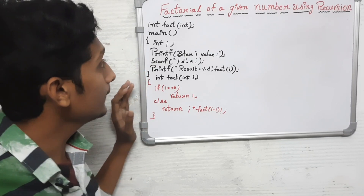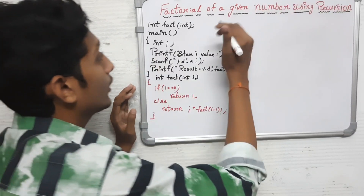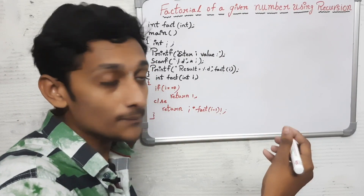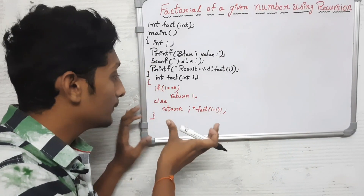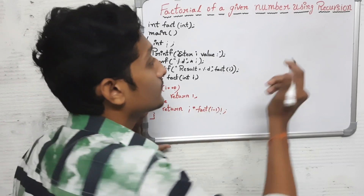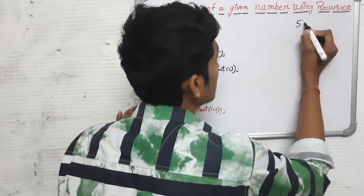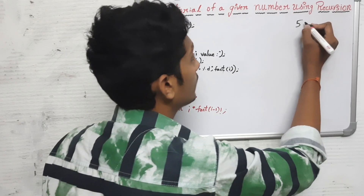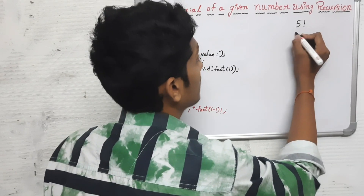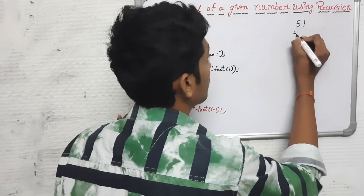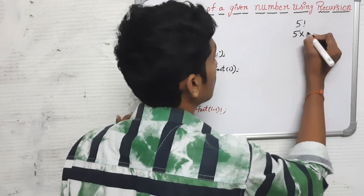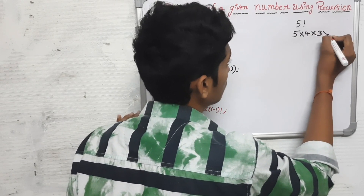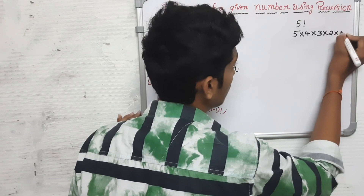In the first part of the factorial program, we will find out the mathematical method. We will see the programming process after. First, we will add a value and find out the factorial. For example, this is 5 factorial: we find out that 5 into 4 into 3 into 2 into 1.